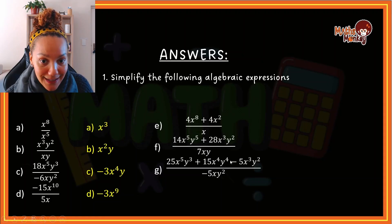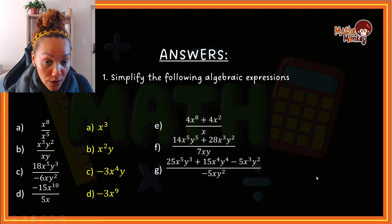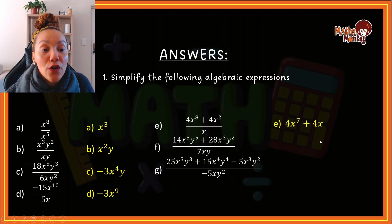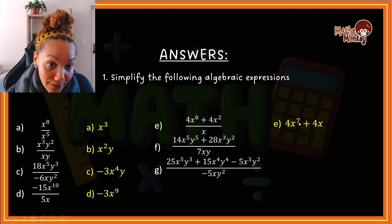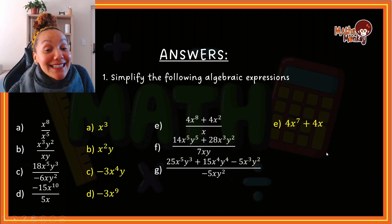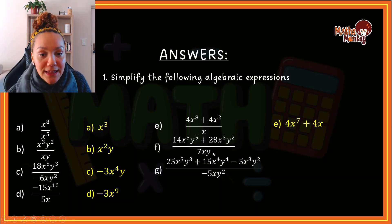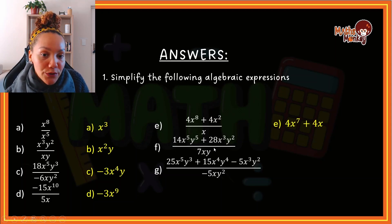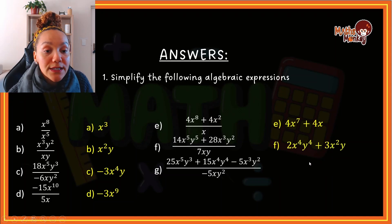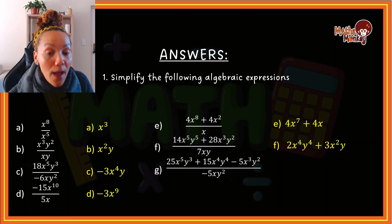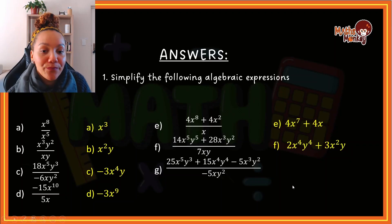Then e, f and g — this is where we have to split the answers. You say 4x to the 8 over x plus 4x squared over x individually, and the answers give you 4x to the 7 plus 4x. For the next one, split this question into two terms: the first term divided by the denominator, then 28x cubed y squared divided by 7xy. Your answer there should have been 2x to the 4 y to the 4, plus 3x squared y.